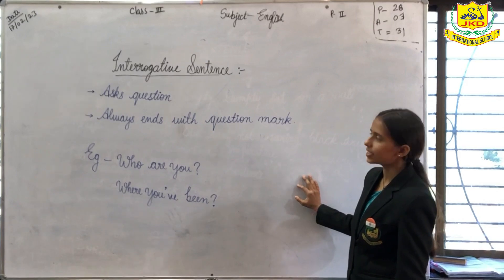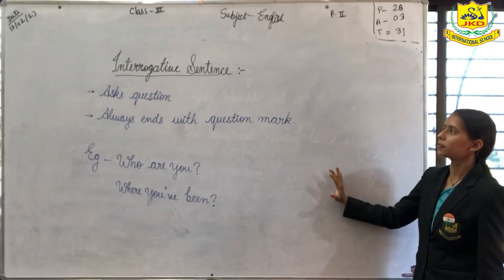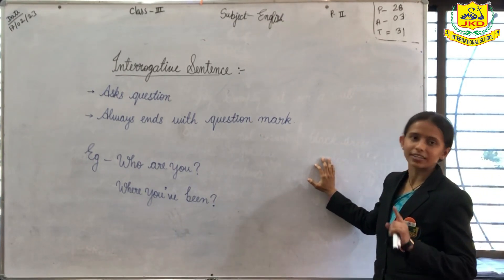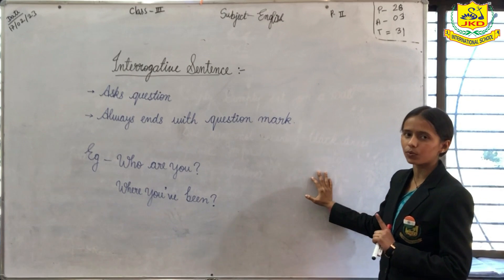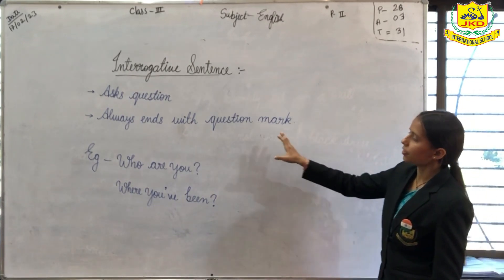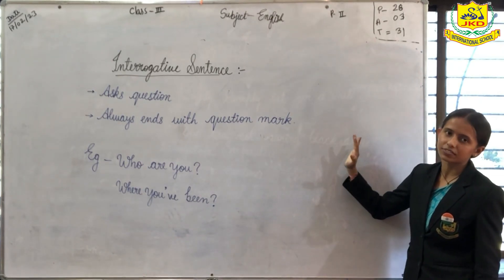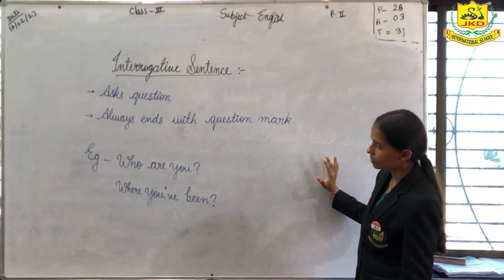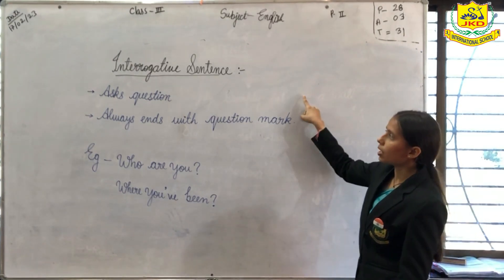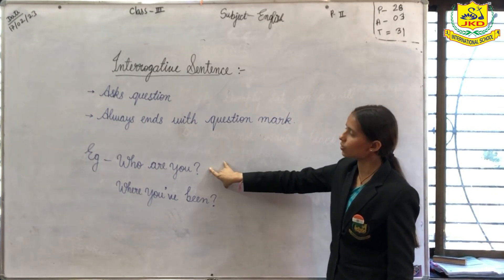The second type is interrogative sentences. Sentences which we use to ask questions — such type of sentences come under interrogative sentences, and interrogative sentences always end with a question mark. So if you have to guess which type of sentence it is, then if you look at the question mark, you must get in mind that it is an interrogative sentence. Here I have written two examples. Who are you? So it is a question, so it would come under interrogative sentence, and as you can see, it always ends with a question mark.